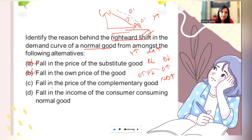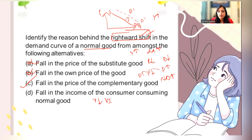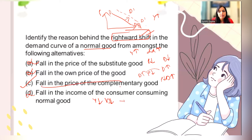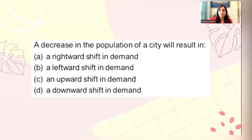A fall in the income of a consumer means demand is low and the rightward shift does not occur. So the correct answer is option C — a fall in the price of a complementary good — which causes the rightward shift.